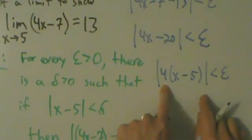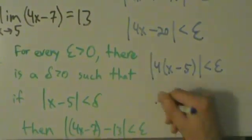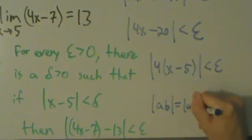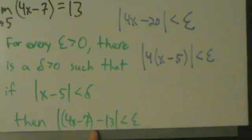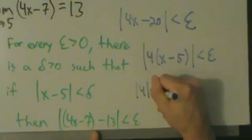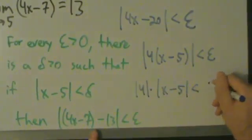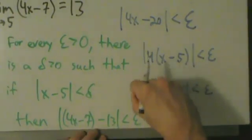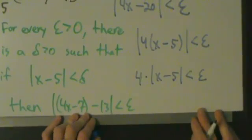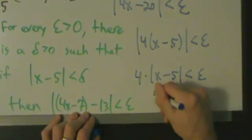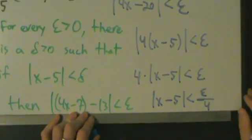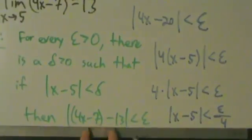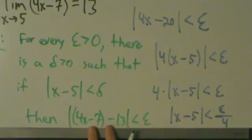Remember, if you have an absolute value like this, 4 is just a constant, so we can pull it out using the property: absolute value of AB equals absolute value of A times absolute value of B. So we get absolute value of 4 times absolute value of x minus 5 less than epsilon, and absolute value of 4 is just 4. So now let's divide both sides by 4, giving us absolute value of x minus 5 less than epsilon over 4. We've taken the condition absolute value of 4x minus 7 minus 13 less than epsilon and reduced it to absolute value of x minus 5 less than epsilon over 4.